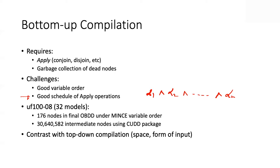To illustrate how dramatic this can get: there is a benchmark CNF with 100 variables and only 32 models. You can get an OBDD for it with only 176 nodes using a variable order generated by the heuristic known as MINCE. But one particular way of constructing this using CUDD in a certain order of conjoining clauses generated more than 30 million intermediate nodes in the process, even though the final OBDD had fewer than 200 nodes.